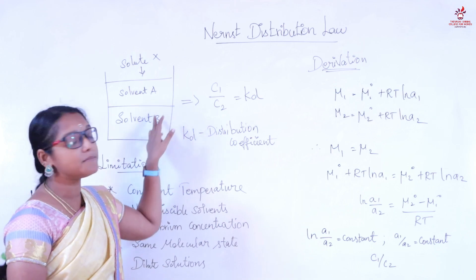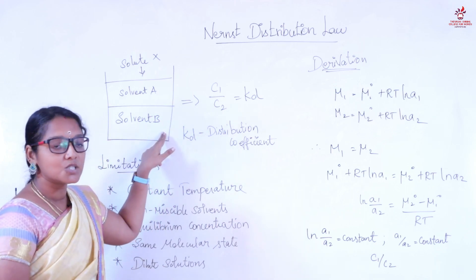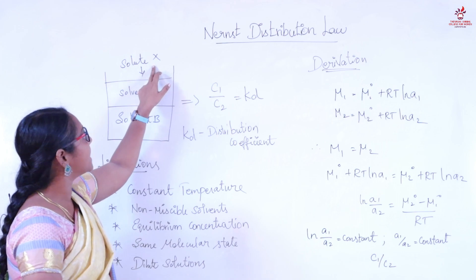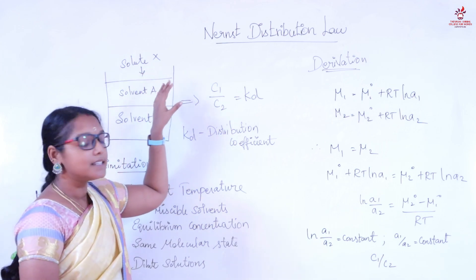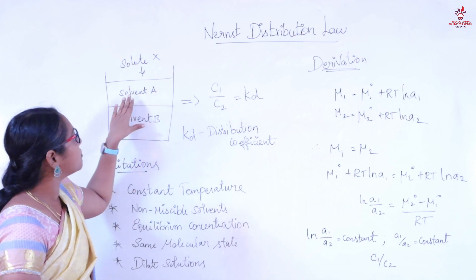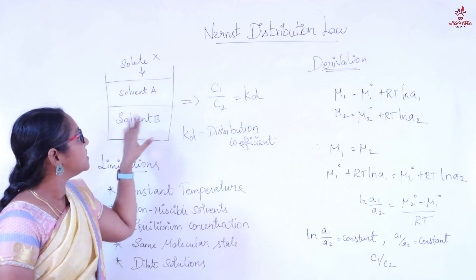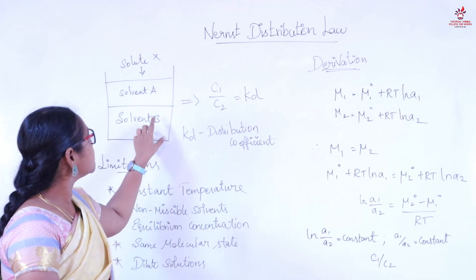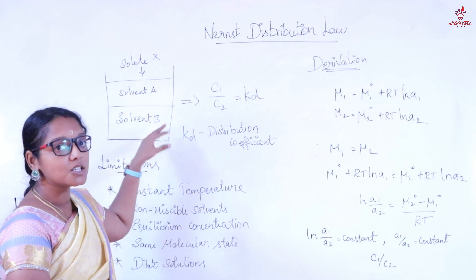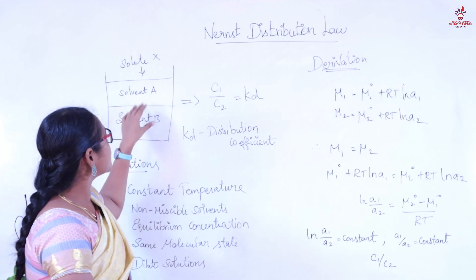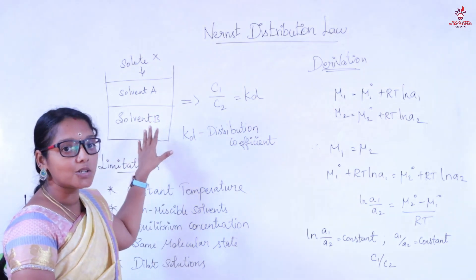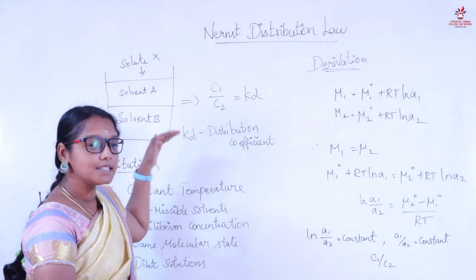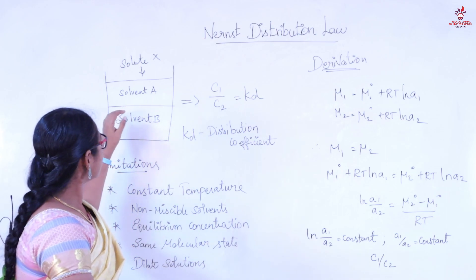First, we consider two immiscible solvents, solvent A and solvent B. In these immiscible solvents, we distribute a solute X. This distribution of solute in the immiscible solvents should be at constant temperature. At constant temperature, the solute is distributed in solvent A and solvent B in the same molecular state — that means the solute is at the same molecular level in both solvents.